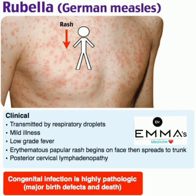Now, clinical presentations. Rubella is transmitted by respiratory droplets and causes a mild illness with low-grade fever. An erythematous papular rash begins on the face then spreads to the trunk — this is a diagnostic feature of rubella. There is also posterior cervical lymphadenopathy.